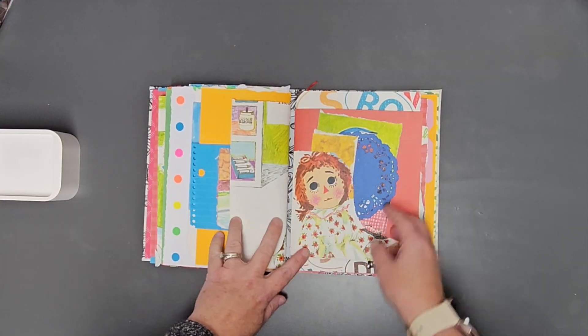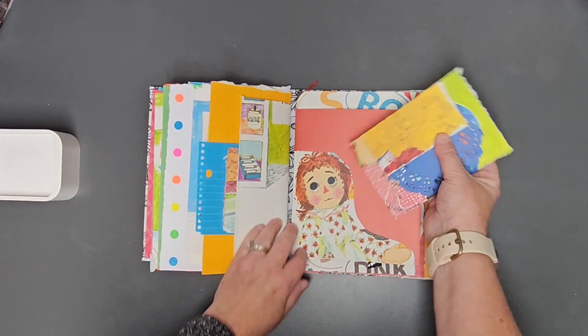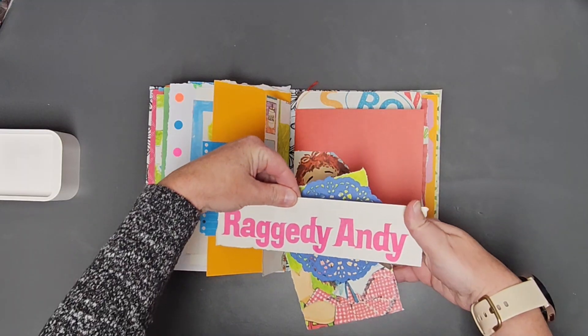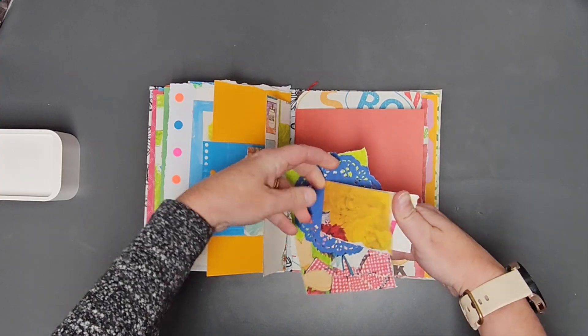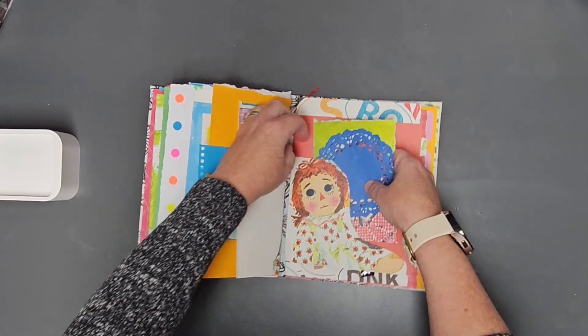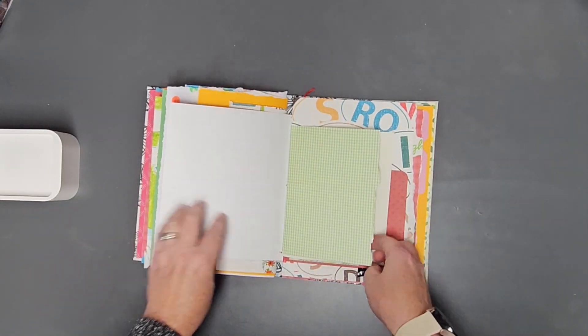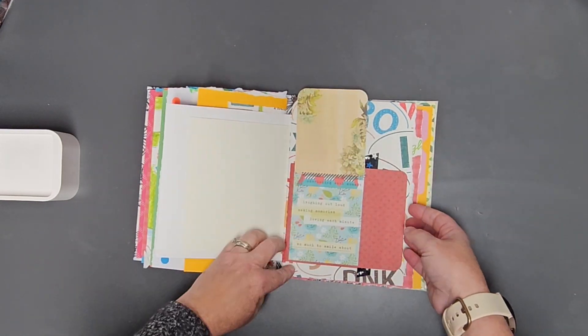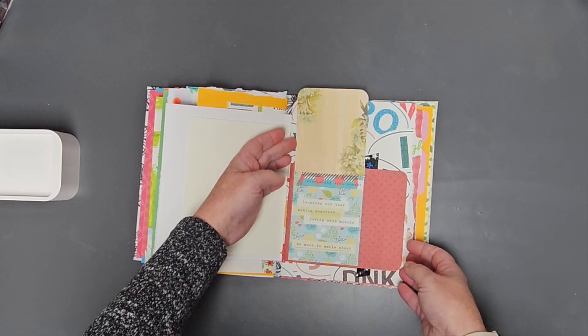And we have a little flap here that holds some cute little things. Raggedy Andy, we've got a doily in there, so it's just kind of like a little folder you can stick some stuff in, lots of room to grow with it. Here's another one, it's got a cute little saying here.